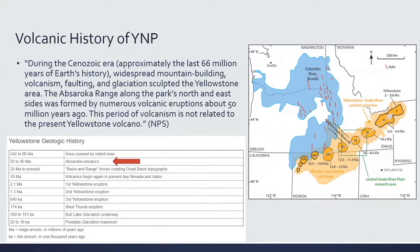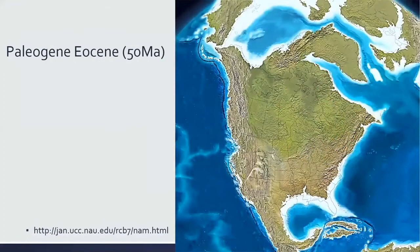A map shows the tracking of the Yellowstone hotspot going back 16.5 million years. For reference, this is what North America looked like during the Paleogene Eocene, about 50 million years ago — important for seeing the mountain building occurring in the south-central Montana/Yellowstone area.